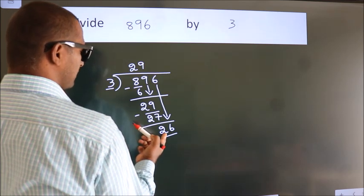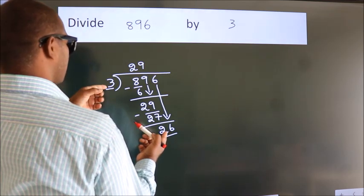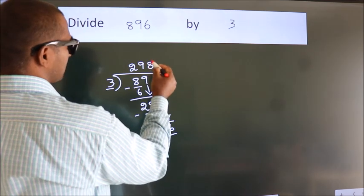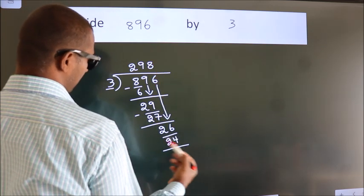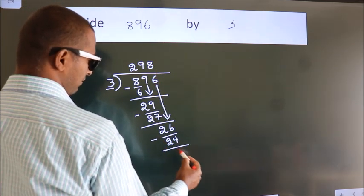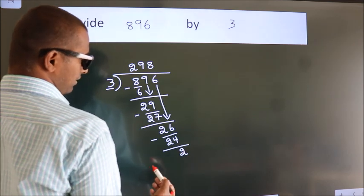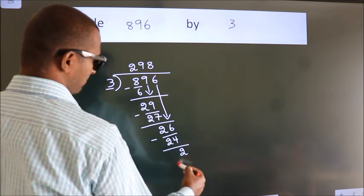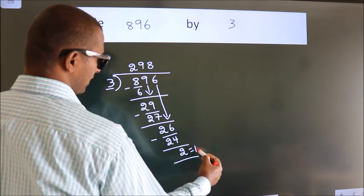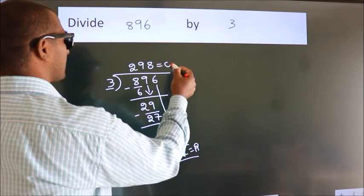A number close to 26 in 3 table is 3 8's 24. Now we subtract. We get 2. No more numbers to bring down. So we stop here. This is our remainder. This is our quotient.